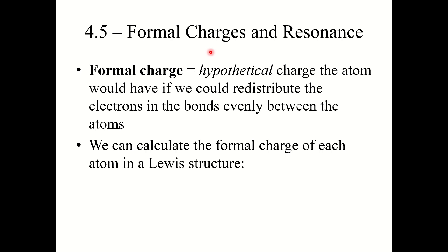Section 4.5: formal charges and resonance. Formal charge is the hypothetical charge an atom would have if we could redistribute the electrons in the bonds evenly between the atoms. Essentially, we are going to imagine taking these molecules and ripping them apart by the bonds, then evenly distributing those electrons back to the respective atoms.